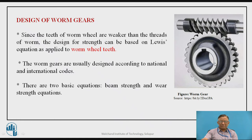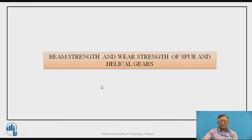Worm gearboxes are available as standard mechanical equipment. So gears are usually designed according to national and international codes. There are two basic equations: beam strength to avoid bending failure, and wear strength to avoid wear failure. So two equations are used. Pause the video for a while and just recall the beam strength and wear strength of spur and helical gears.